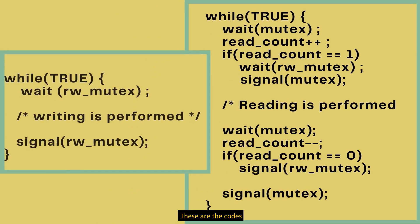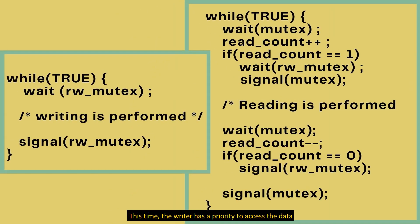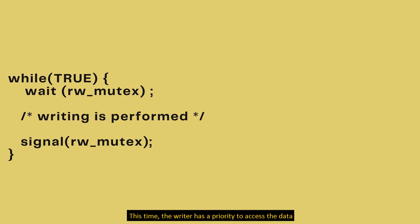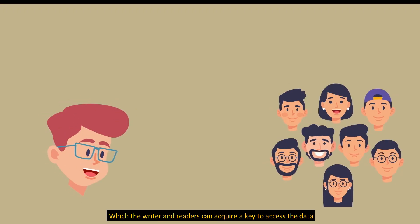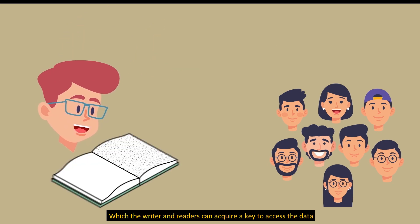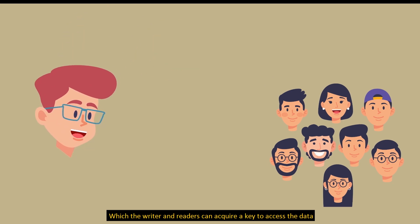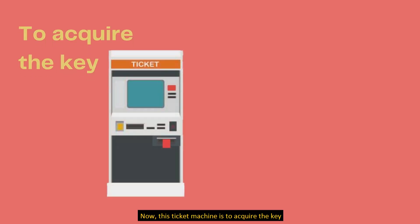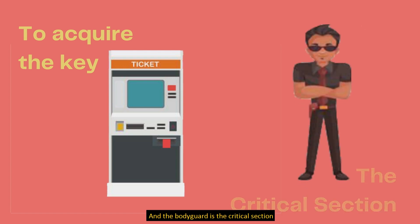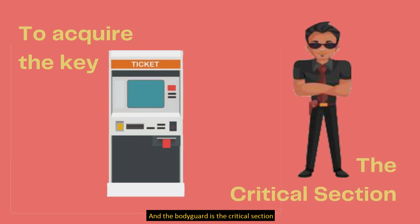These are the codes. This time the writer has the priority to access the data, and both the writer and readers can acquire a key to access the data. This ticket machine is to acquire the key and the bodyguard is the critical section.